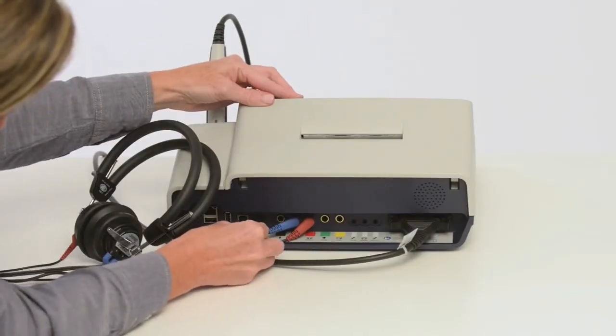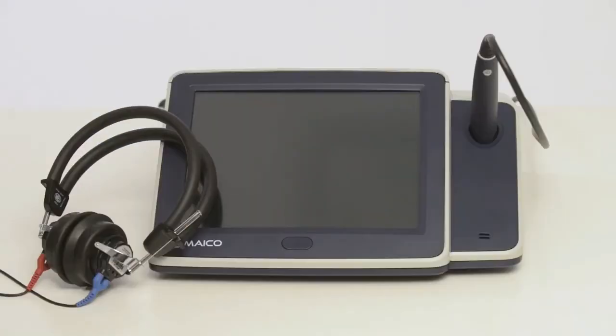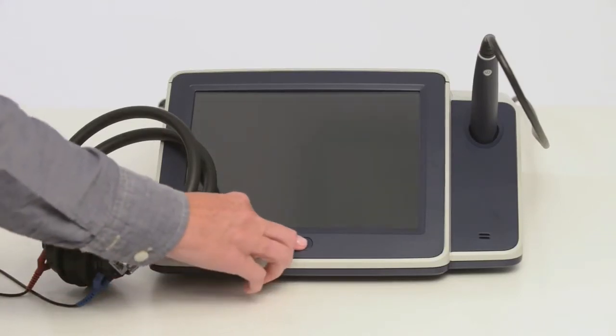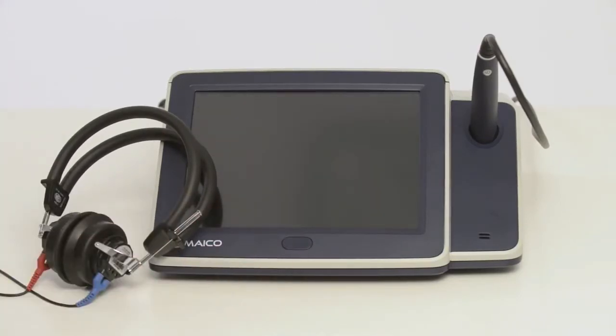Connect the power cord. Power on the device by pressing the button located at the bottom of the display. The tympanometry screen will appear.